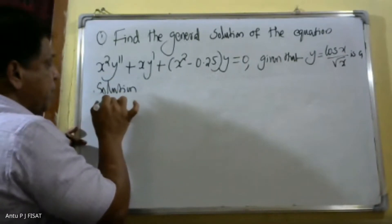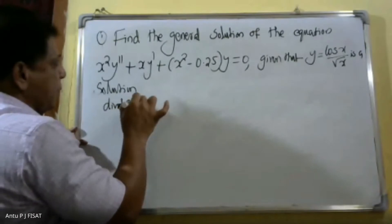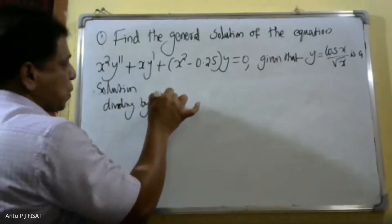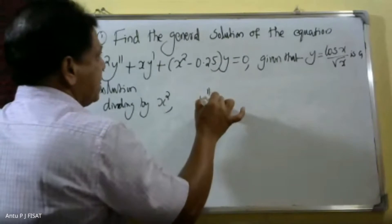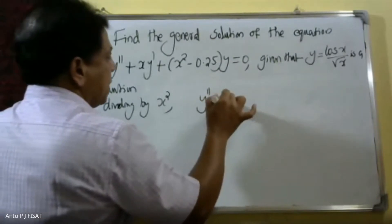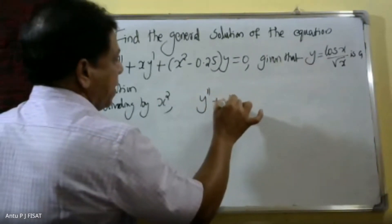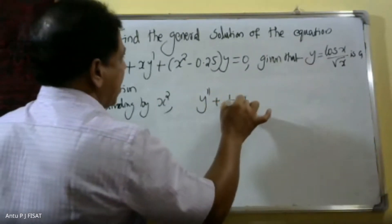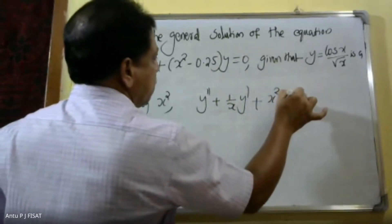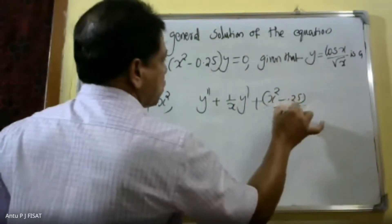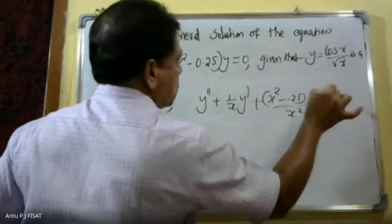Dividing by x²: y'' + (1/x)y' + (x² - 0.25)/x² · y = 0.